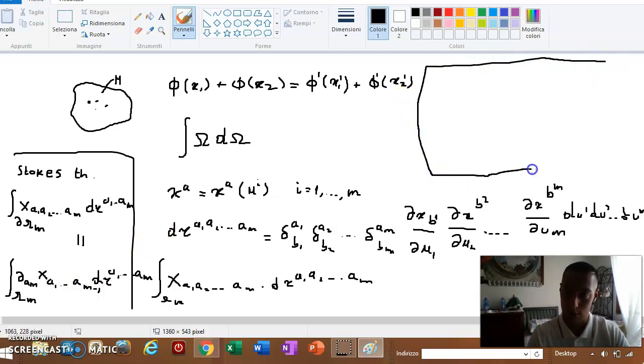In the case we treat four dimensions, it becomes the Gauss Theorem or the Divergence Theorem. Let's state it. That is a particular case, I repeat, of the Stokes Theorem.